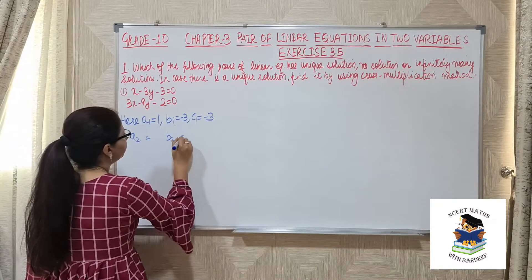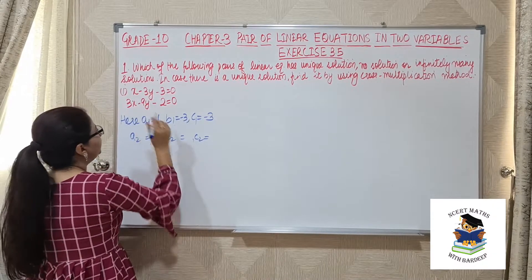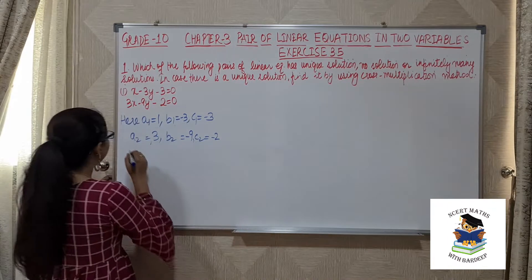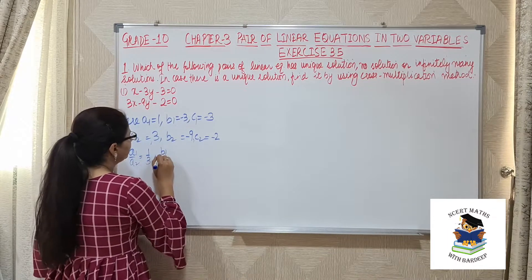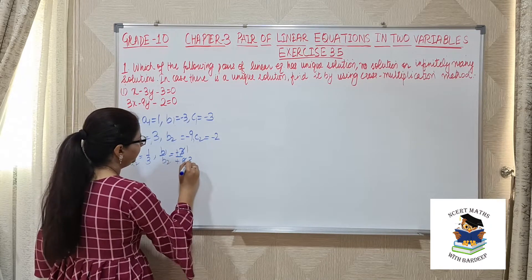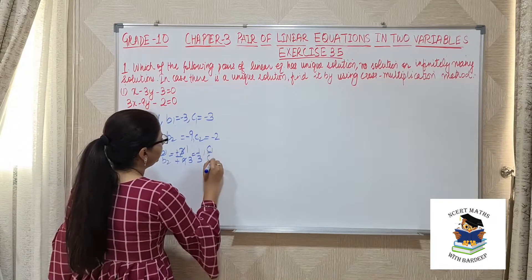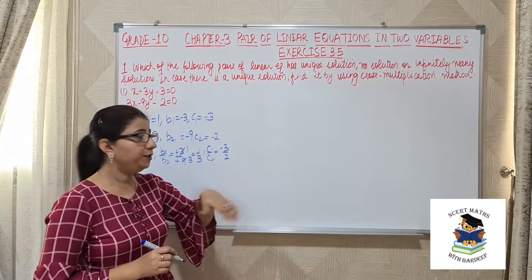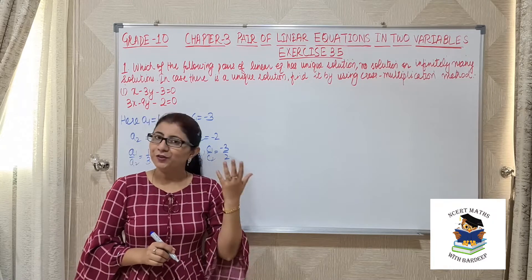Now a2, b2, and c2: a2 is 3, b2 is minus 9, and c2 is minus 2. We will find the ratios: a1/a2 is 1/3. b1/b2 is minus 3 over minus 9, which simplifies to 1/3. And c1/c2 is minus 3 over 2, which is minus 3/2. So we have found that a1/a2 equals b1/b2, but this does not equal c1/c2. So this comes into the category of no solution.